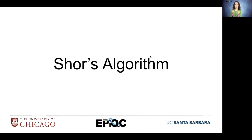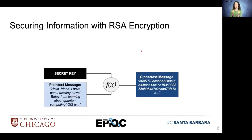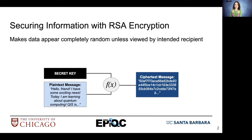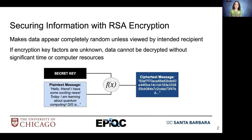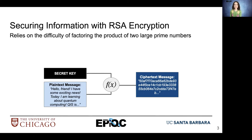The topic of this series of slides is Shor's algorithm, one of the most exciting applications of quantum computing. Let's introduce RSA encryption. RSA encryption is what we depend on to secure information. It makes data appear completely random unless it's viewed by the intended recipient. For example, if we have a plain text message, it'll be combined with a function and some secret key in order to create ciphertext. RSA encryption relies on the difficulty of factoring the product of two large prime numbers.